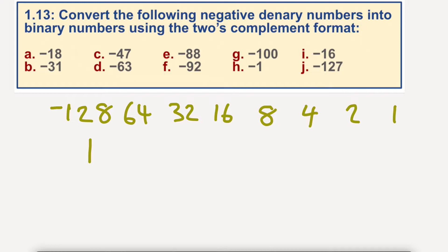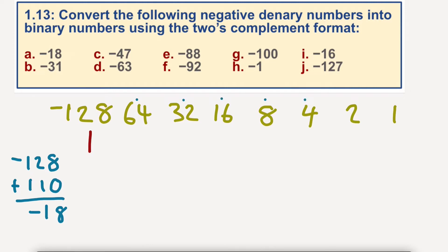Now then, to get to this, we need to add the positive numbers on to get it up to minus 18. If I start with minus 128, and I've got to get to minus 18, I've got to add positive 110 to it. So if I add positive 110, I end up with minus 18. So in these numbers here — these are all positive numbers — I've got to add some of these numbers together in order to get from minus 128 up the number line to minus 18.